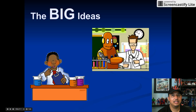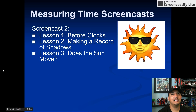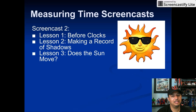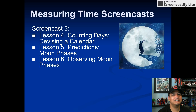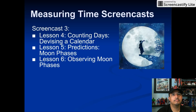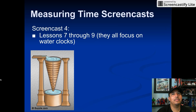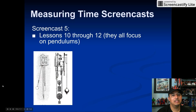The kit has 16 lessons, and I will be creating five additional screencasts organized by common themes. Screencast two will have lesson one — before clocks, lesson two — making a record of shadows, and lesson three — does the sun move. Screencast three will have lesson four — counting days and devising a calendar, lesson five — predictions and moon phases, and lesson six — observing moon phases. Screencast four will have lessons seven through nine, which all focus on water clocks. Students explore different water clocks and use different variables to control how long it takes for the clocks to drain.